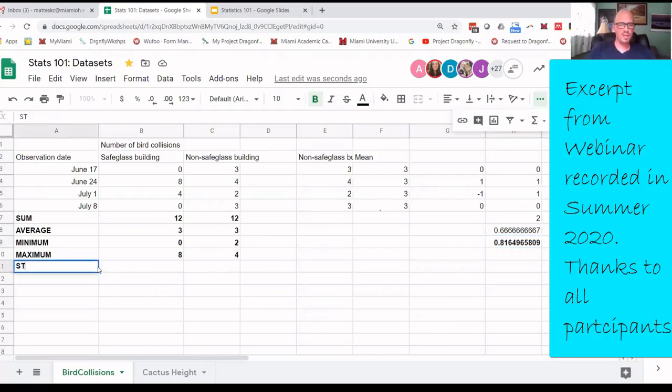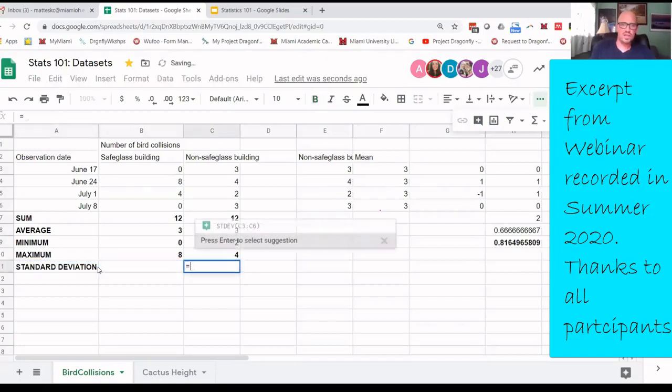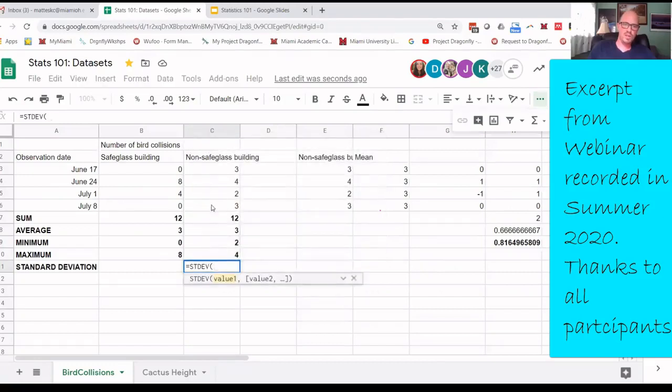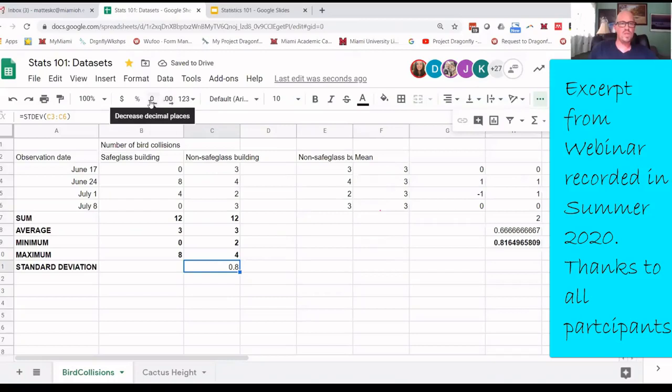So that is our standard deviation. If you don't believe me, let's go here, equals standard deviation. Here's the formula, standard deviation. There's different ones. But we're just going to use a basic formula. Highlight your area. Close it off. And 0.8, you can adjust always the number of decimal places in spreadsheets. So let's drop that out. And there we have it. The much easier way is to just calculate it.